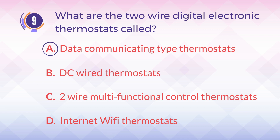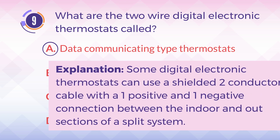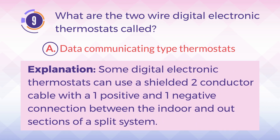The answer is A. Data communicating type thermostats. Explanation: Some digital electronic thermostats can use a shielded two-conductor cable with one positive and one negative connection between the indoor and outdoor sections of a split system.